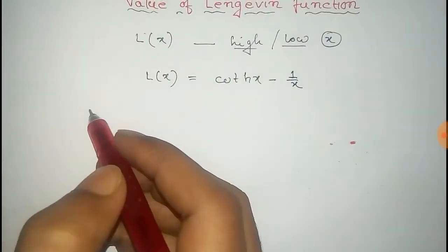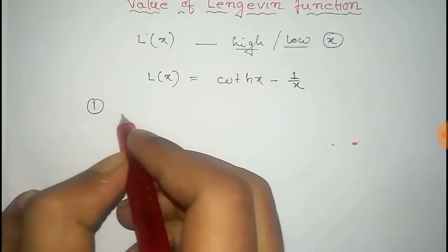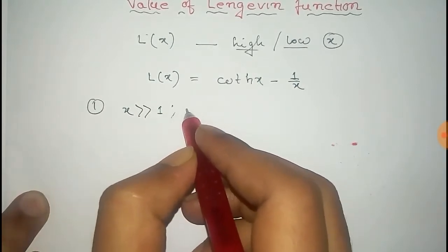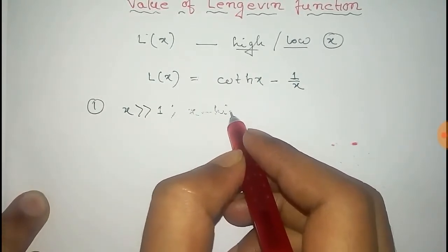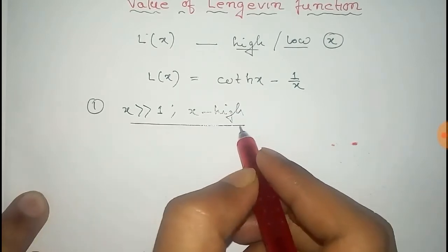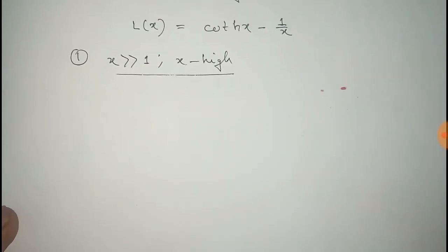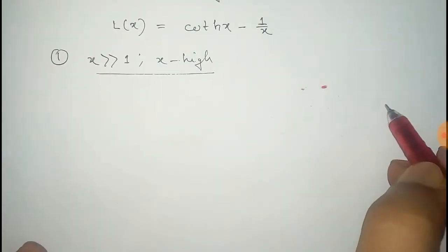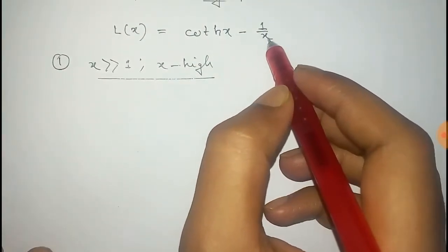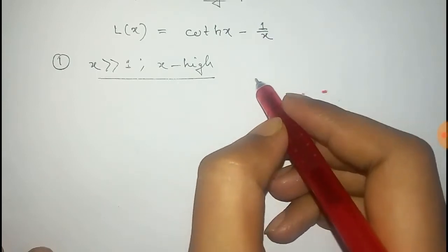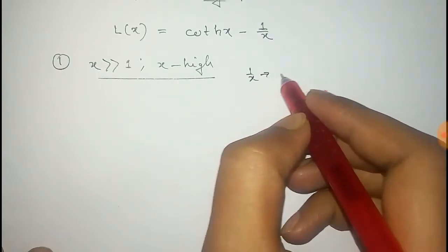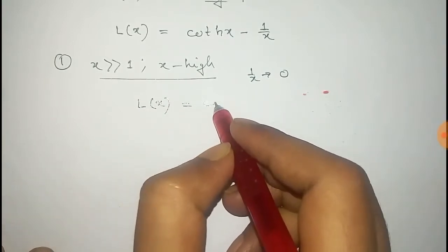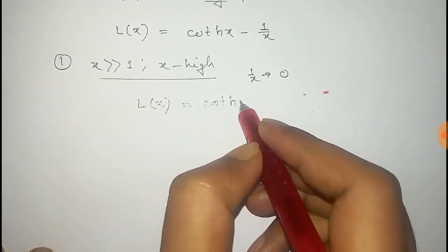First, we consider the case where X is very, very greater than 1 — that is, X is high. For that case, 1/X tends to 0 because X tends to be high, so this term can be neglected. Therefore, L(X) is equal to coth(X).